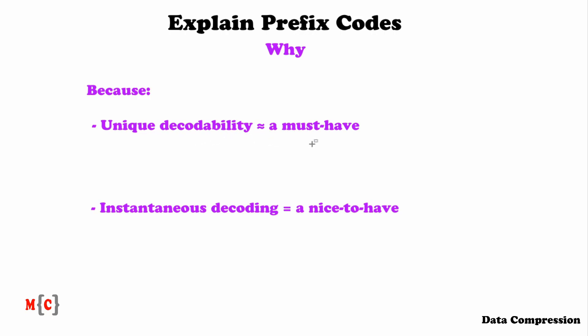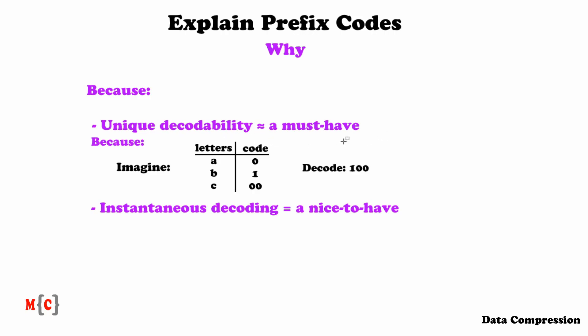Unique decodability is pretty much a must-have in coding. Imagine we have this code with letters A, B, and C, where the code for A is 0, the code for B is 1, and the code for C is 00. Now with the following task, we have to decode 1, 0, 0. If you want to think about this first, you can pause the video, but I'm going to continue with the answer.